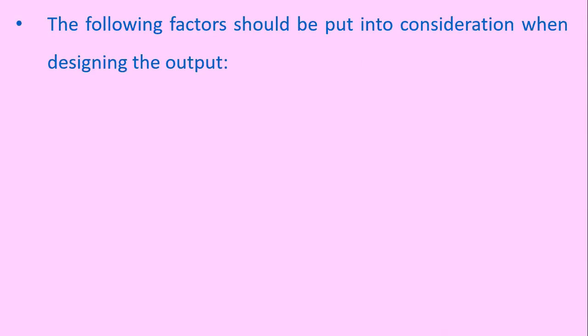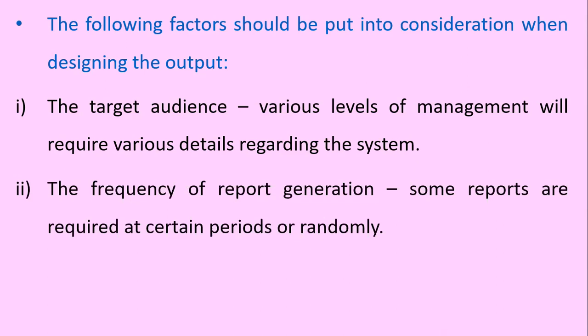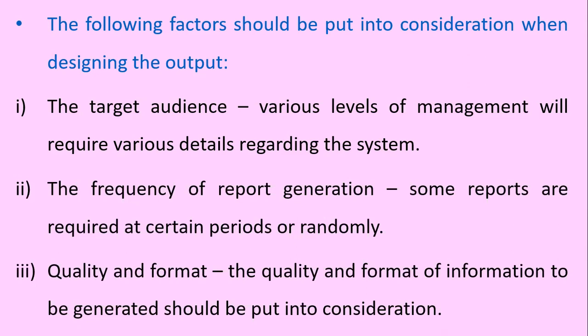The following factors should be put into consideration when designing the output. Number one is the target audience, as various levels of management will require various details regarding the system. Number two is the frequency of reporting generation, because some reports are required at certain periods or randomly. Number three is the quality and format, because the quality and format of information to be generated requires a certain format and to be of certain quality.